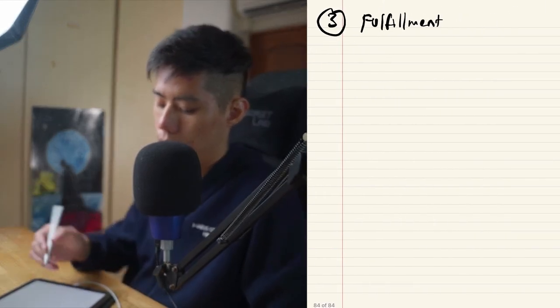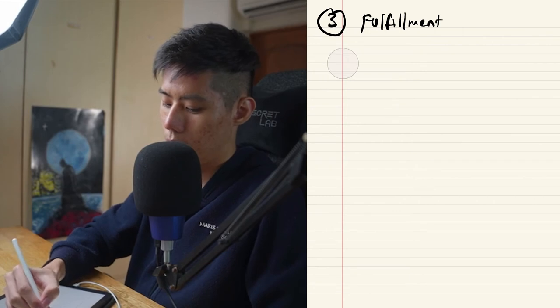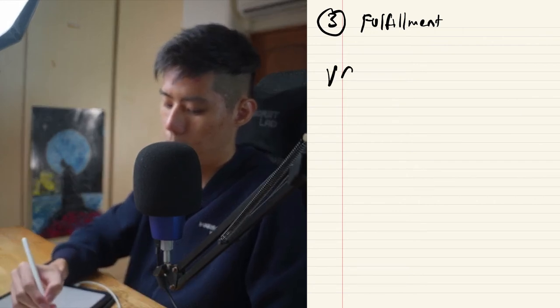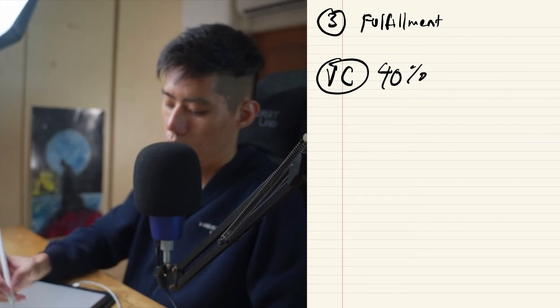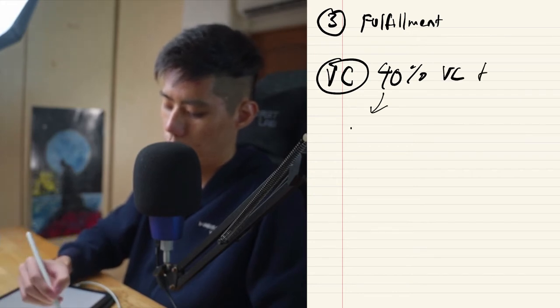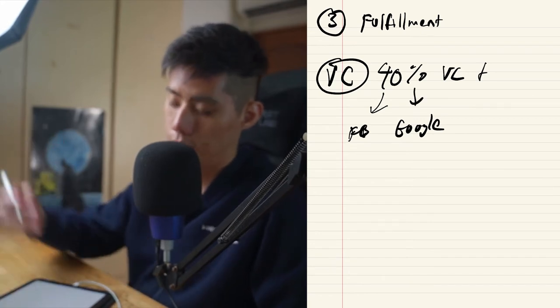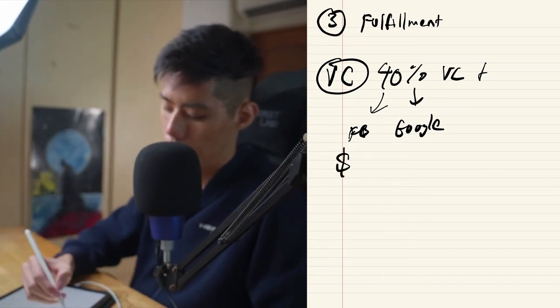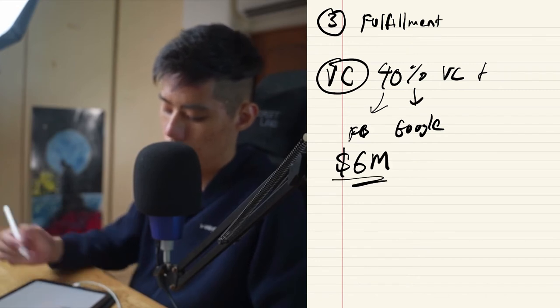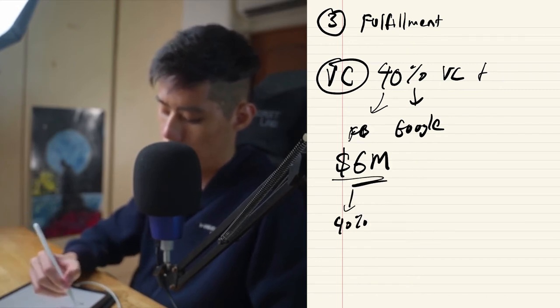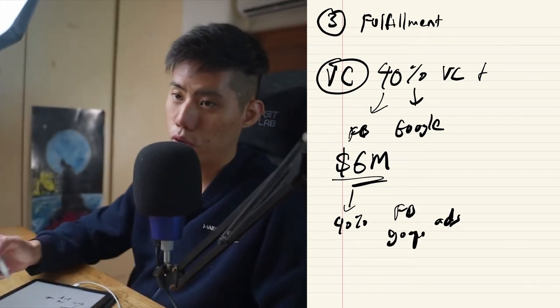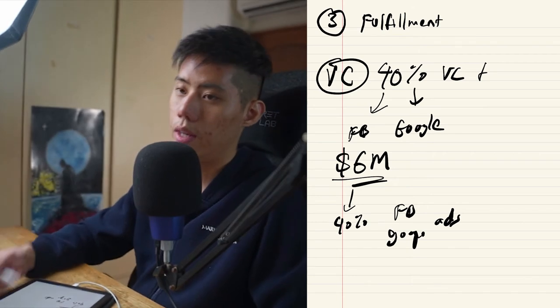Let me prove it to you as well. Sorry, number three is fulfillment. Traffic and acquisition is the most expensive and hardest thing because if you know anything about the VC world, for example, venture capital world, did you know that 40% of all VC funds go to Facebook and Google? So for example, if you see on the news, people raise money and stuff like that. They raise at a $40 million valuation and they raise $6 million, for example. Did you know that 40% of this goes directly to Facebook ads, goes directly to Google ads?